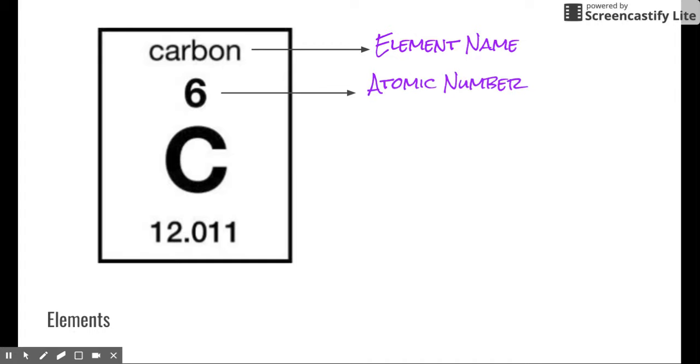This next number here, usually a whole digit number, and it's found in order on the periodic table, is the atomic number. Now the atomic number is an extremely important number because it represents the identity of that atom. And if you recall from last unit, the identity of the atom is really just the number of protons. And so the atomic number is the number of protons that that element contains. So carbon here has six protons.